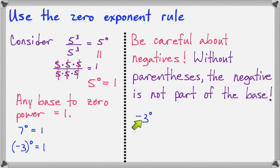In this example, negative 3 to the 0, the base is 3. The negative is not part of the base. So 3 to the 0 becomes 1, but the negative is still here. 3 to the 0 becomes 1, that's what I have underlined here, but the negative stays.